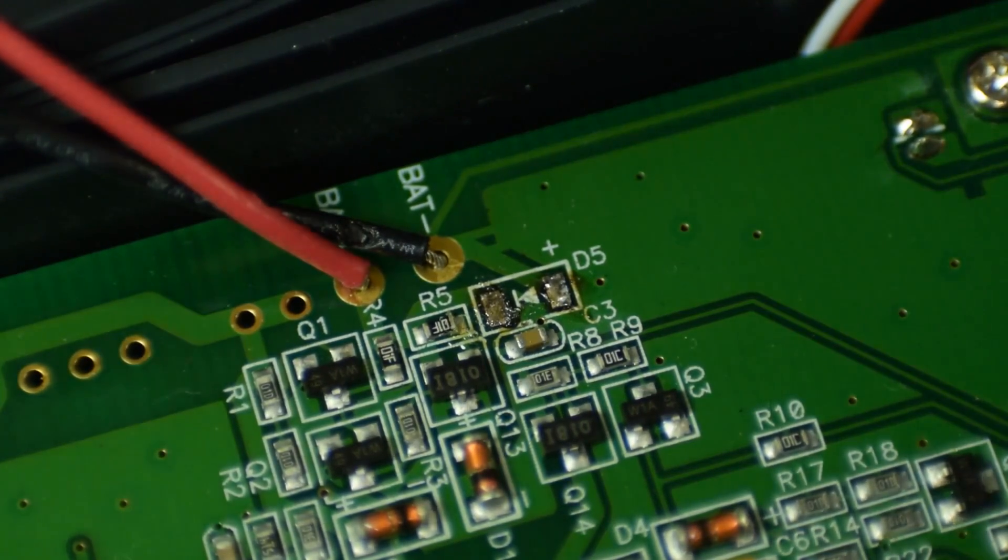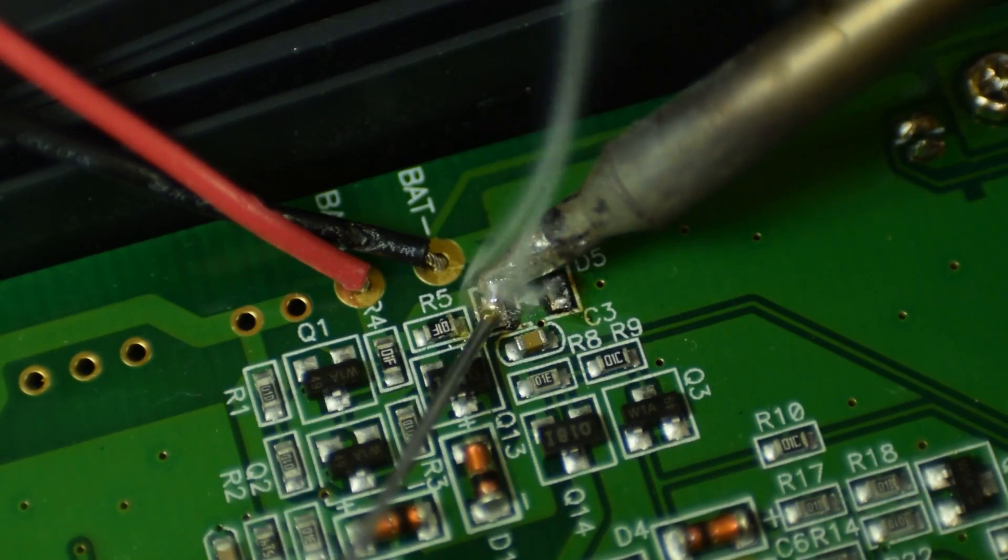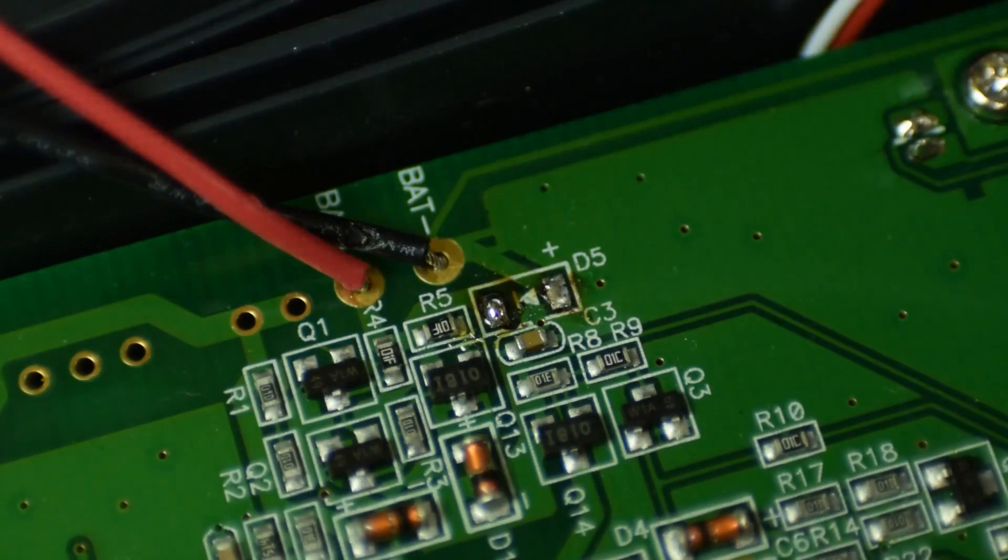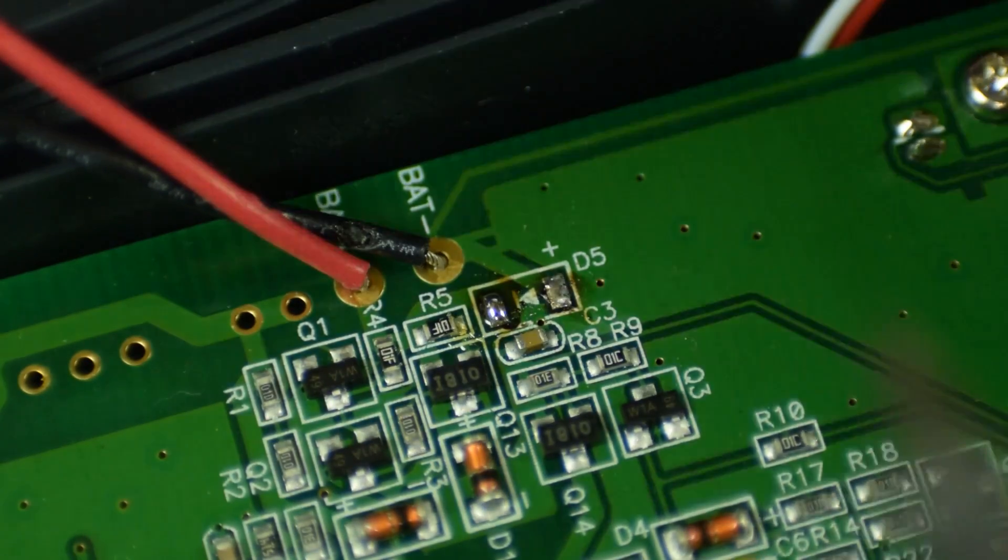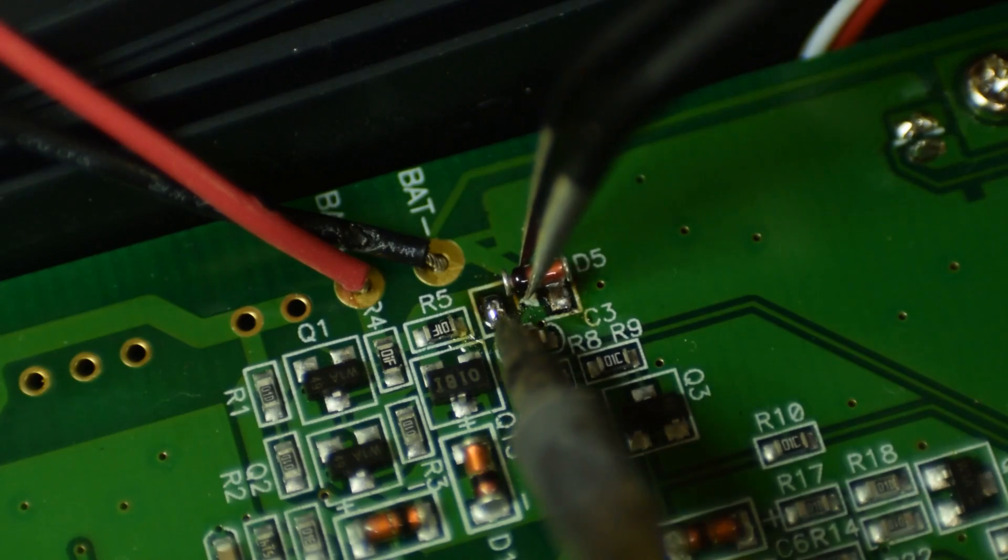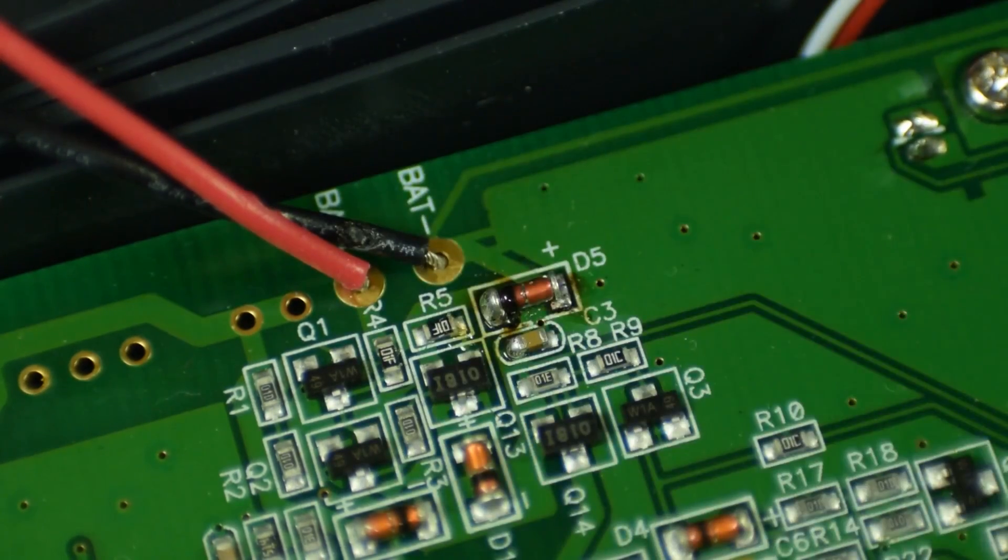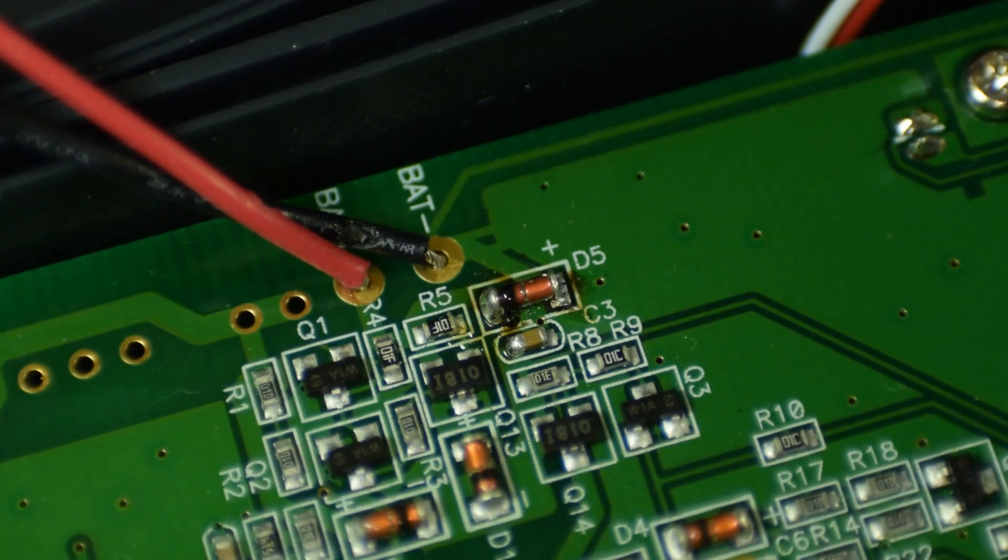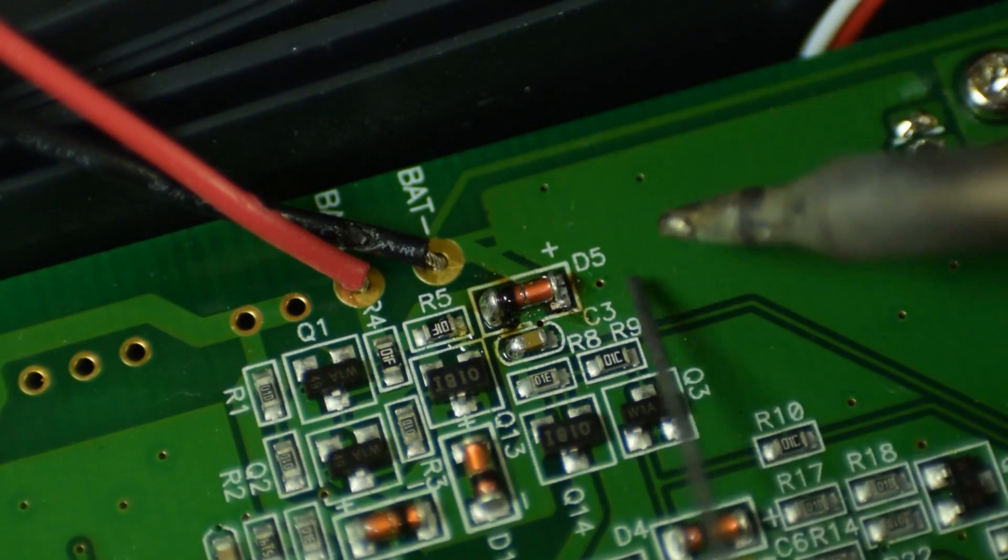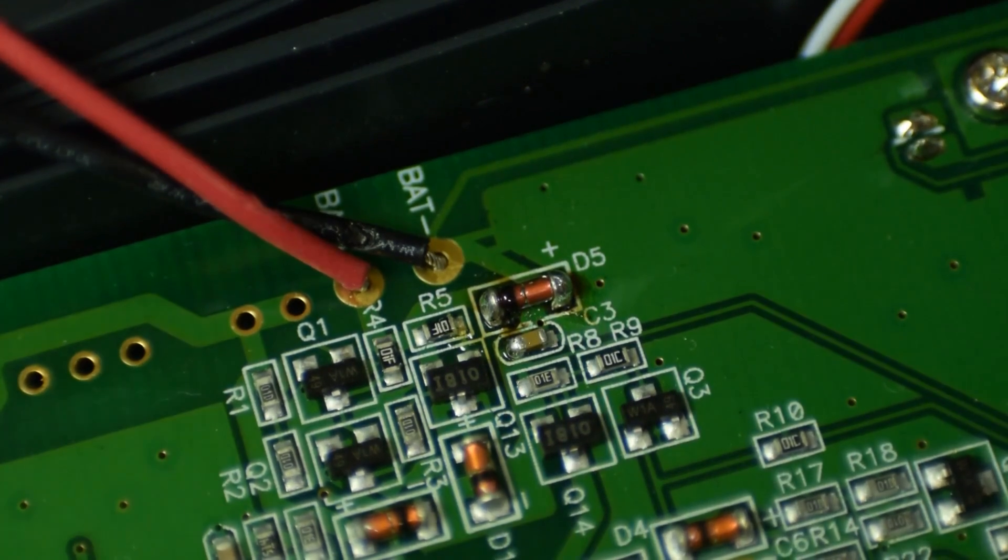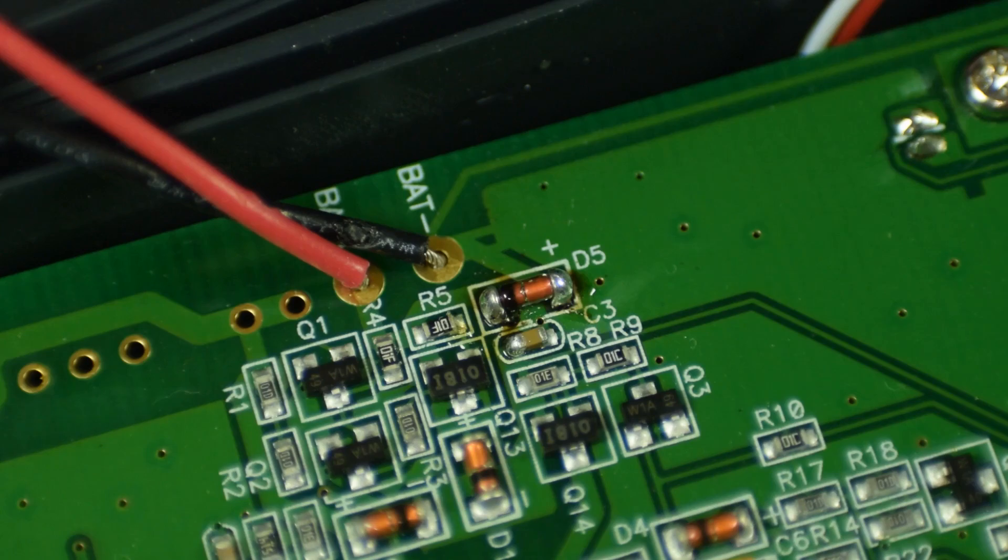Now we'll put down some fresh stuff on one side. There we go. And tack the diode down. There we are. Get the other side secured. And there we have it. A successful repair of the LCR meter.